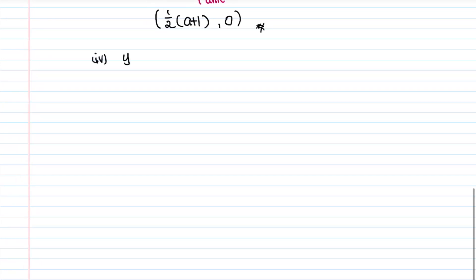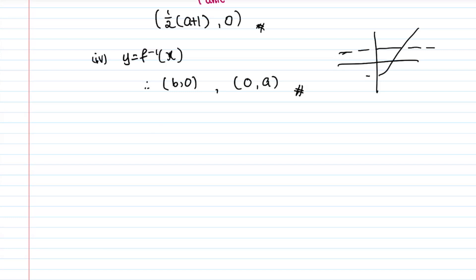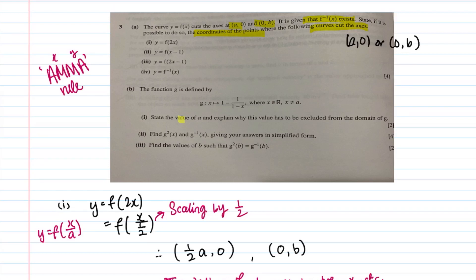Part four is the easiest — it gives you the inverse. When you take the inverse, your x and y values simply swap. So the new intercepts are (b, 0) and (0, a). You can always draw a simple curve to verify, making sure it obeys the horizontal line test — y = k intersects at only one point — since the inverse exists for this curve.